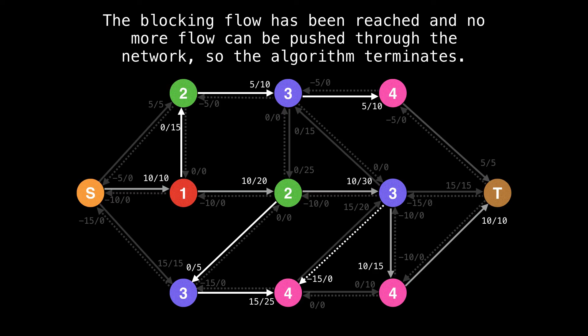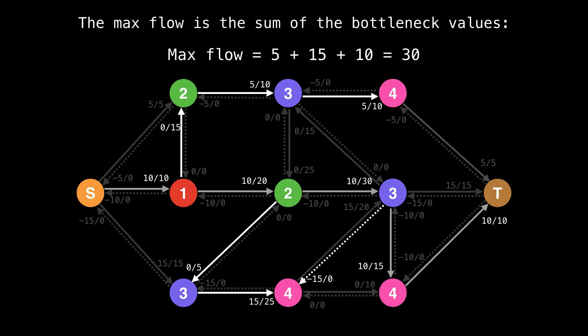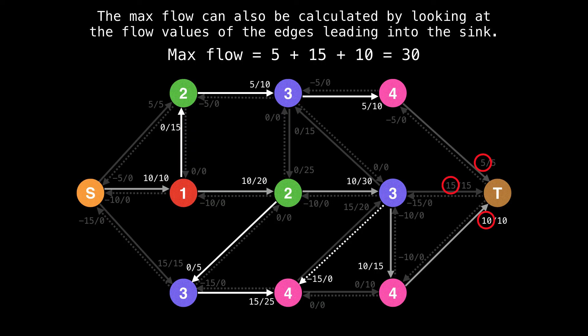The maximum flow is the sum of all the bottleneck values, which if you recall, were 5, 15 and 10 for a maximum flow of 30. The maximum flow can also be calculated by looking at the flow values of the edges leading into the sink highlighted in red on the slide.